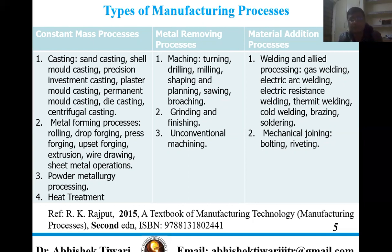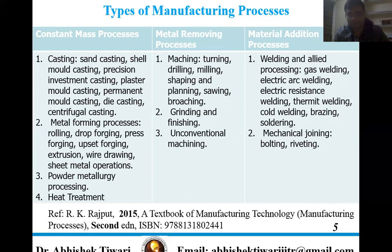Second is grinding and finishing — for example in metallurgy we do sample polishing, grinding it against emery paper. Third is unconventional machining. We can also have processes based on material addition, such as welding or allied processes for repairing components — gas welding, electric arc welding, electric resistance welding, thermite welding, cold welding, brazing, and soldering. Second type is mechanical joining, such as bolting and riveting.